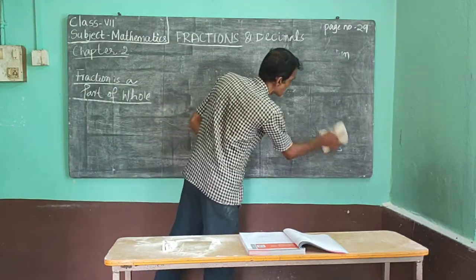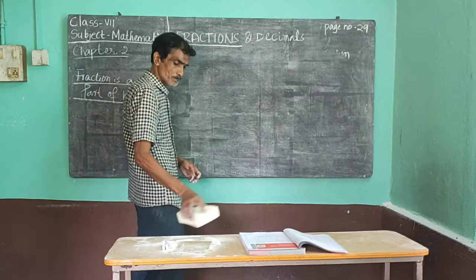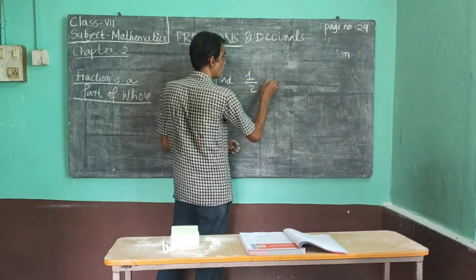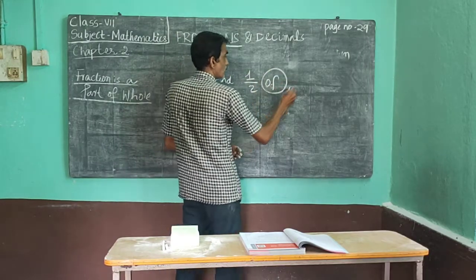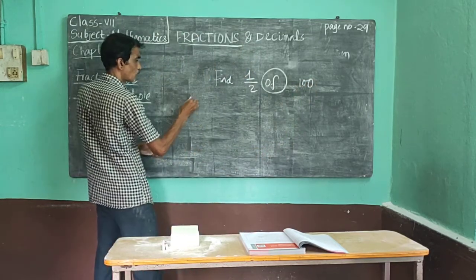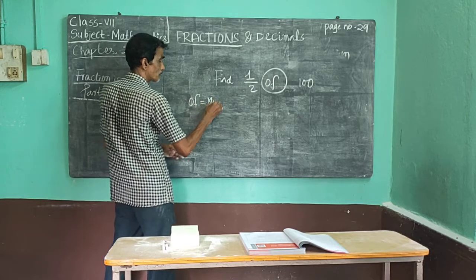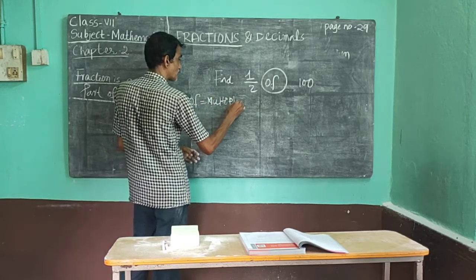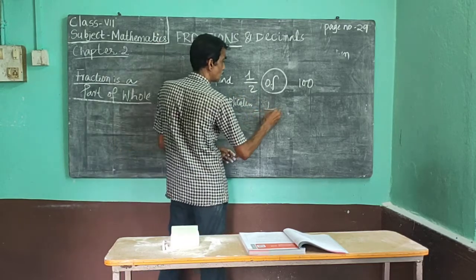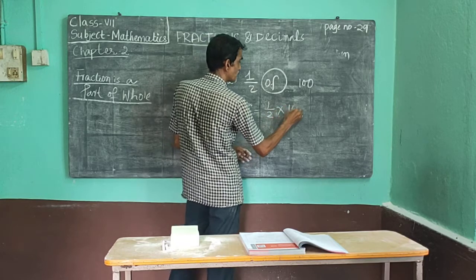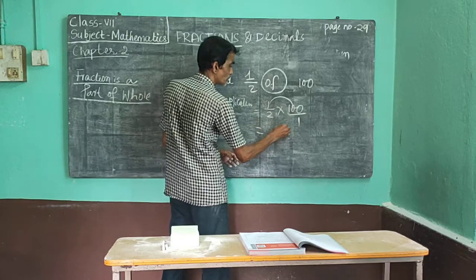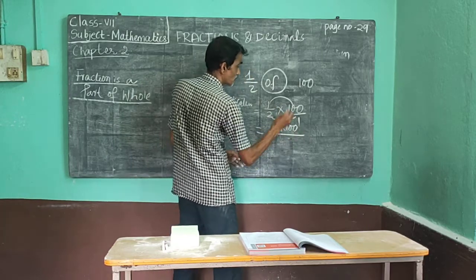Sometimes this type of question will come: find one upon two of 100. Please remember, 'of' means multiplication. So convert it: one upon two multiplied by 100 — numerator with numerator, denominator with denominator. Similarly, of means multiply when you see that word in fraction problems.